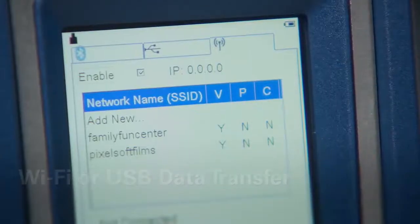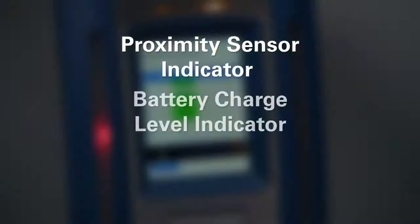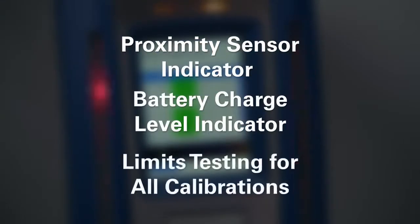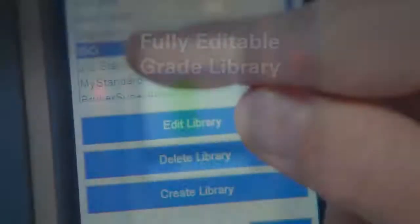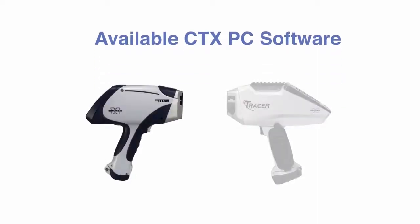Additional features include Bluetooth connection, proximity sensor indicator, battery charge level indicator, limits testing available for all calibrations, and a fully editable grade library. The CTX also has the same PC software available as Bruker's proven S1 Titan and Tracer 5i portable handheld XRFs.